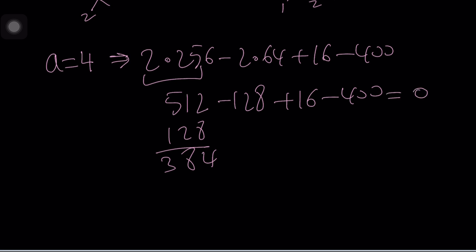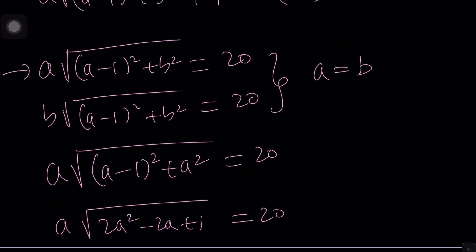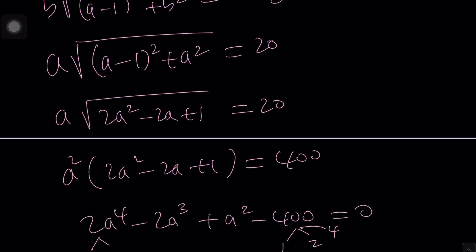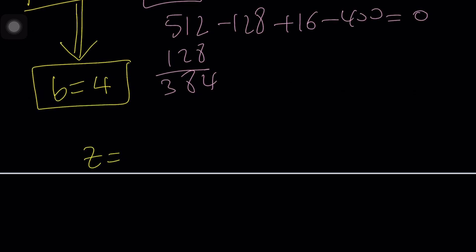Well of course this wasn't by chance. I knew that a equals four is supposed to be a solution. Now a equals four implies that b equals four. So what does that mean? Because a and b are equal, b is also equal to four and that means z equals 4 plus 4i. Is that the answer? Is that the only solution?